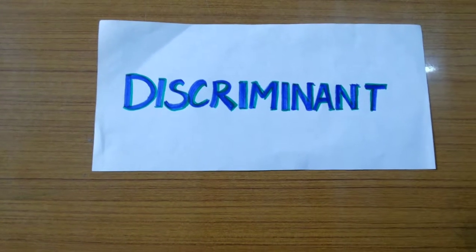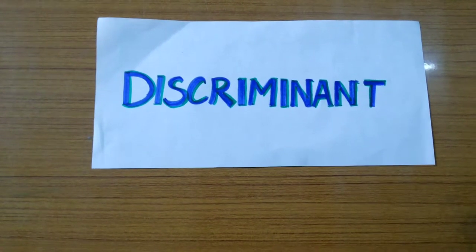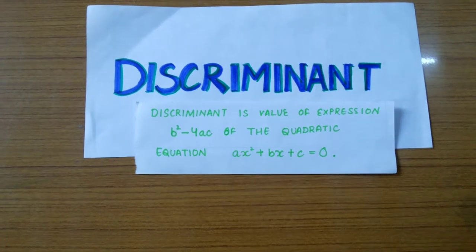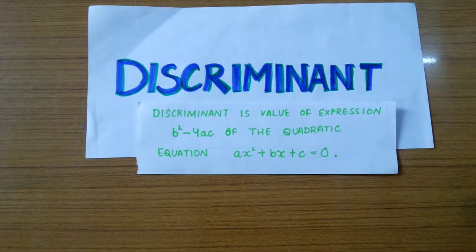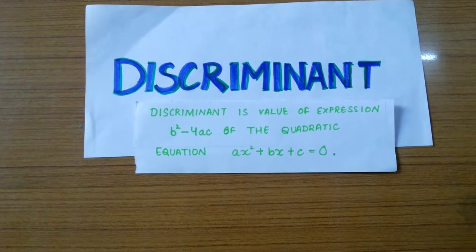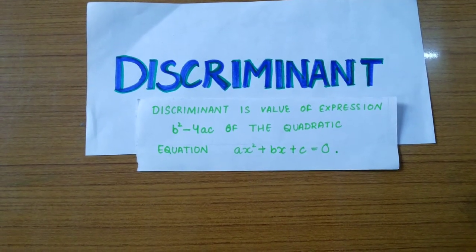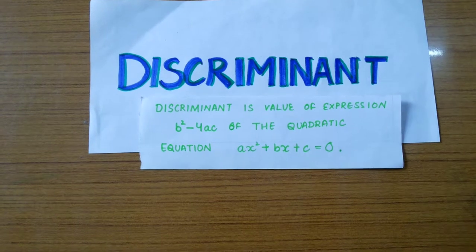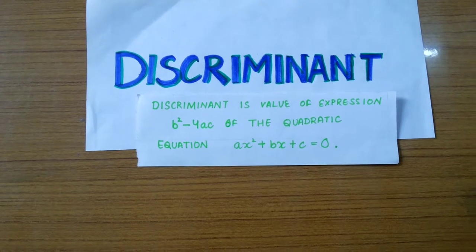What do you mean by discriminant? The discriminant is the value of the expression b squared minus 4ac of the quadratic equation ax squared plus bx plus c equals zero.